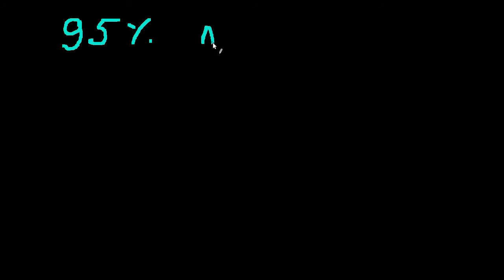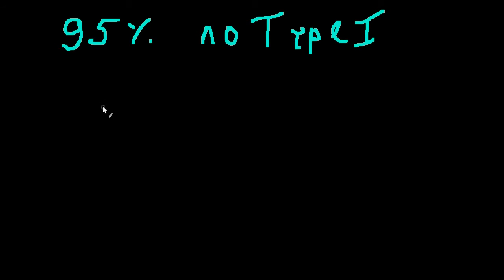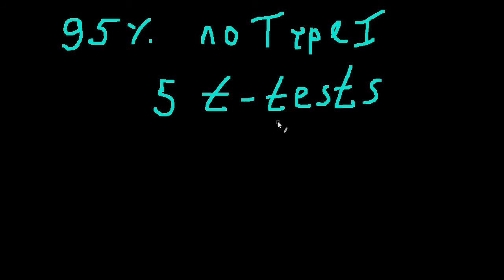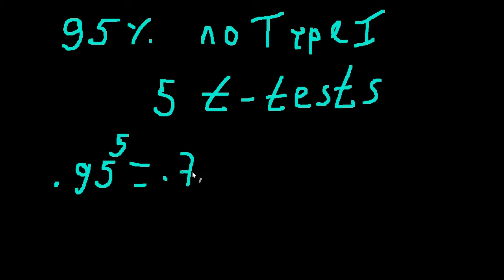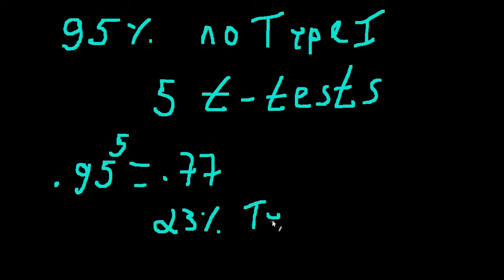Let's say that there is a 95% chance of committing no type 1 error. If you do 5 t-tests, the probability of making no type 1 error while doing these 5 t-tests would be equal to 0.95 raised to the power of 5, which equals 0.77. In other words, there is a 23% chance of committing a type 1 error while doing these 5 t-tests.